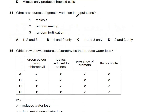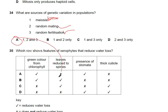Question 34: what are the sources of genetic variation in a population? Meiosis produces genetically variant haploid cells, random mating introduces variation, and random fertilization also contributes. All three options are correct. The answer is A: one, two, and three.